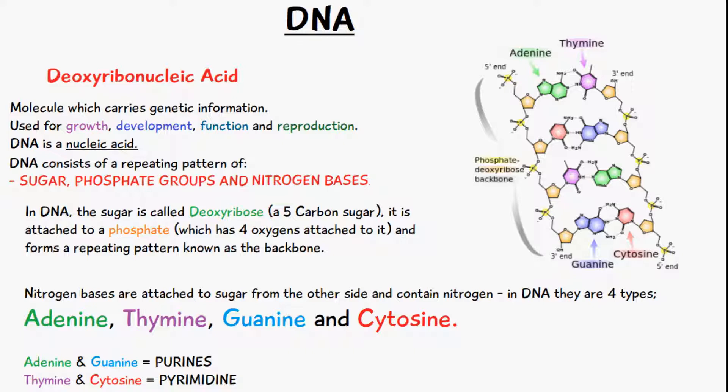In the middle of the ladder are the steps, which are the nitrogen bases — two nitrogen bases attached to each other. DNA is like a ladder but twisted and rotated, so it's like a spiral. DNA is known as a double helix structure.